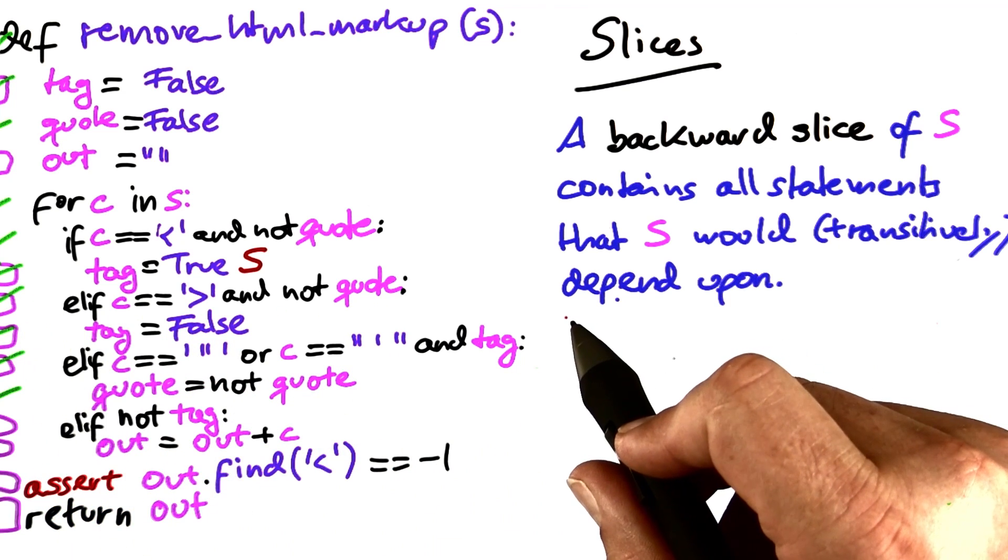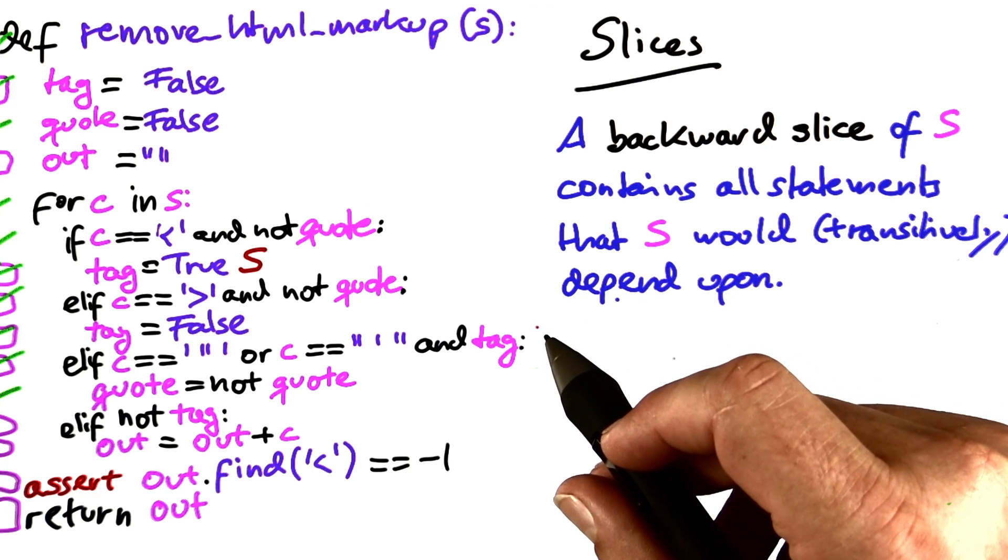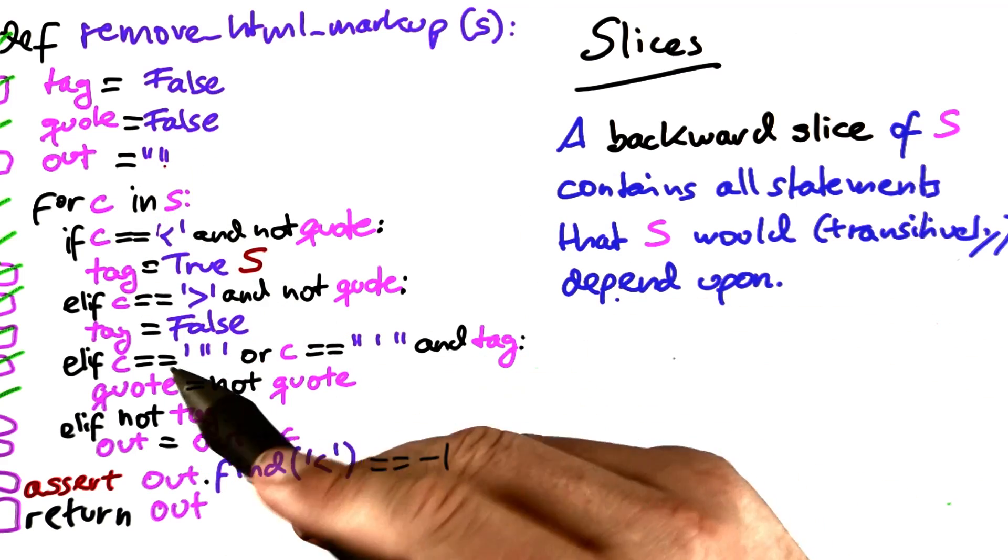What's usually more interesting than the backwards slice itself is what is not contained in the backwards slice. That is the statements that are not checked.